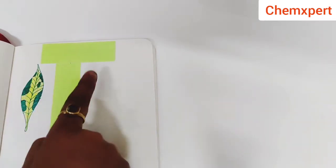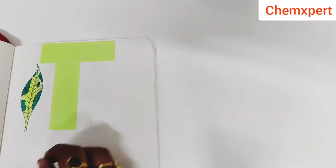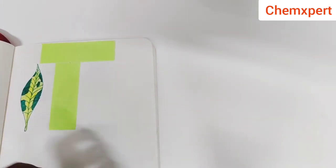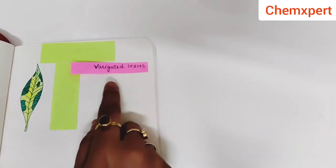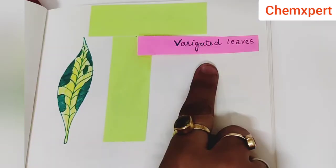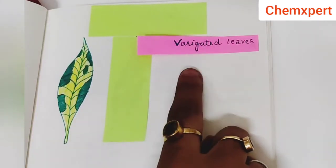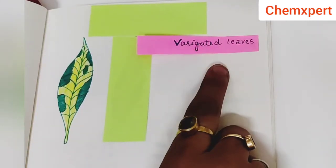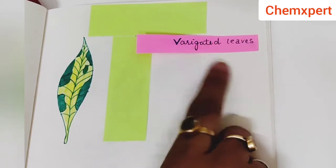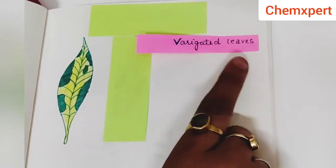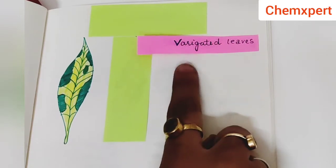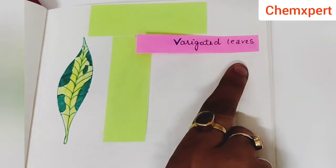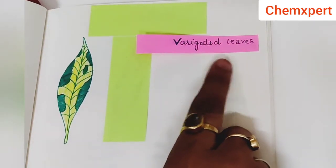Examples of variegated leaves include money plant or crotons. First, we take a potted plant having variegated leaves and place it in a dark room for two to three days so that all the starch is used up. Then we place this potted plant again in sunlight so that photosynthesis will take place.